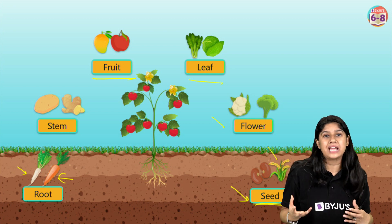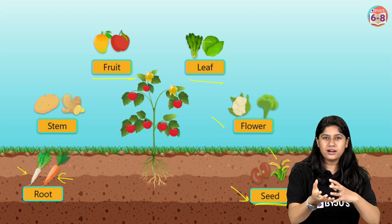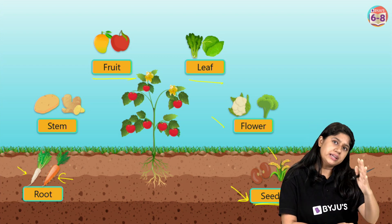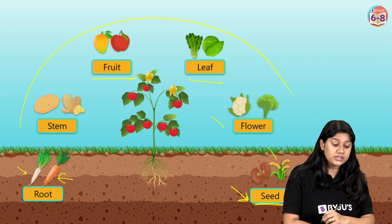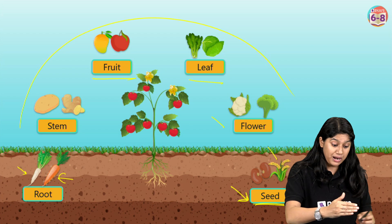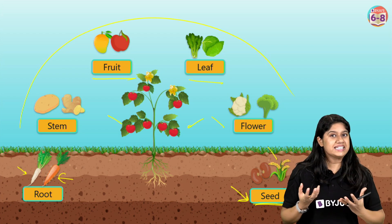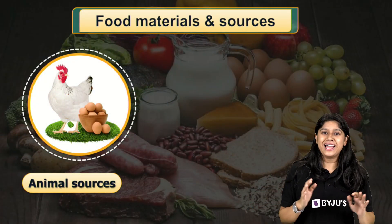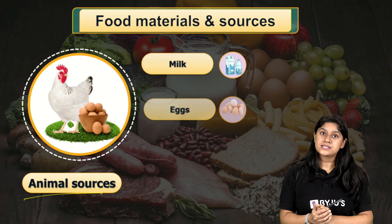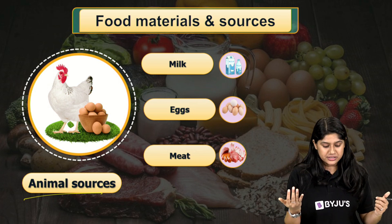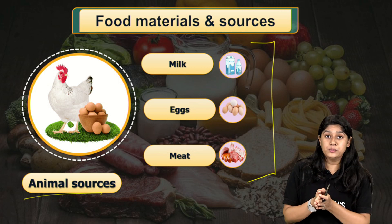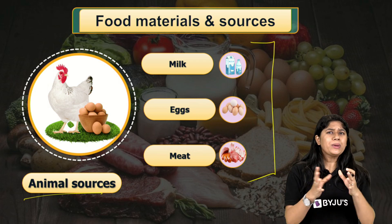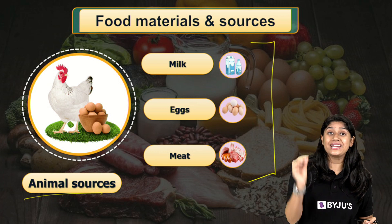Specifically in the seed category, we have different types of seeds from different plants, and there are also other sources in the seeds category. So we are getting all of this from plants, and these are different parts of plants that we can eat. Now we'll discuss animal resources, which is really very easy. Animals give us milk, egg, and meat. These resources come from animals and various organisms — especially humans — consume these.